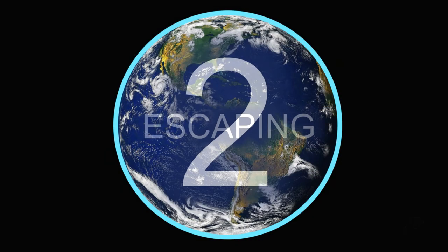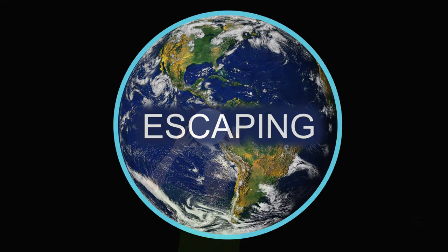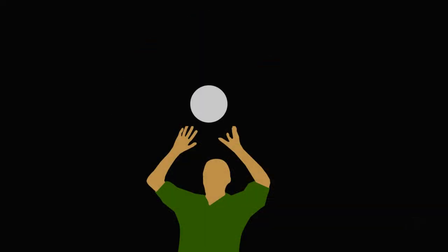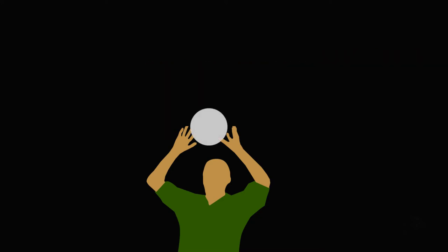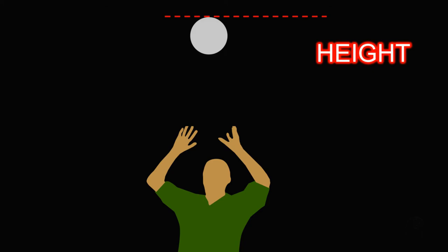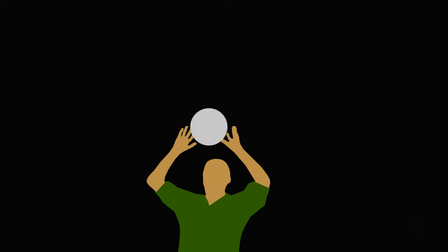Fact number two, escaping our atmosphere on Earth. If you take a ball and throw it up in the air, it'll reach a maximum height and eventually come back down from where you threw it. But if you now throw the ball a little faster than before, it'll reach a higher height but again, eventually come back down.